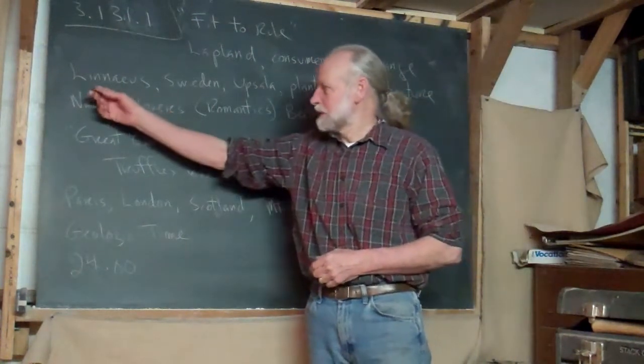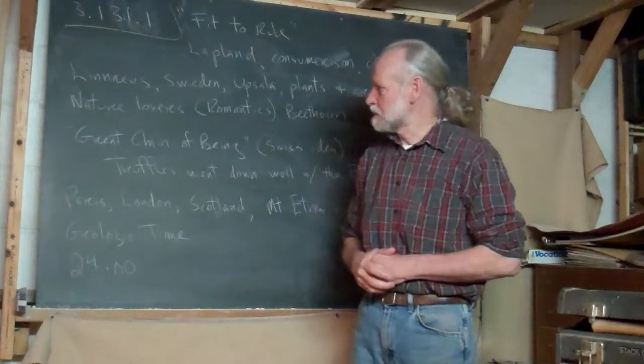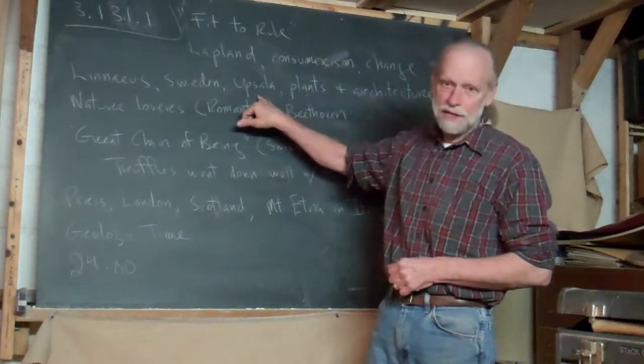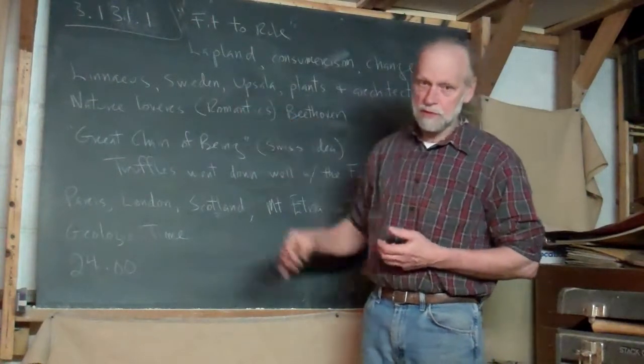It all becomes pretty clear by the end. Anyway, he goes then to a man named Linnaeus. I think I've got his name spelled right. He lived in Sweden. Uppsala, if I'm not mistaken, is the university where he was.